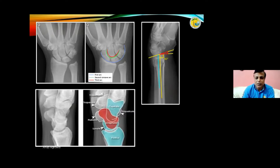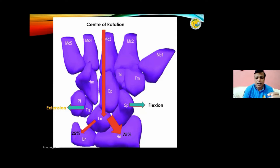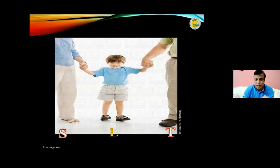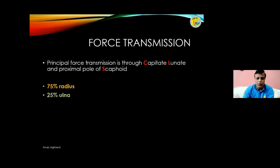Before jumping to the diagnosis, a bit of anatomy and kinematics about the wrist. We know there is a proximal row and a distal row, and they form certain arcs — first arc, second concave arc, and third arc — which need to be maintained on AP X-ray. The capitate is the center of rotation; the lunate is in a dynamic state where the triquetrum usually goes into extension and the scaphoid into flexion. Force transmission: 25% to the ulna, 75% to the radius. The lunate is the center of dynamic balance between the scaphoid and triquetrum.